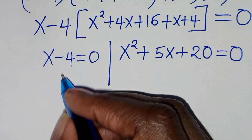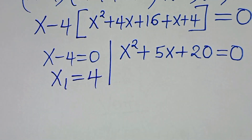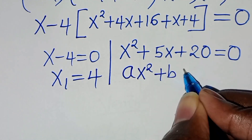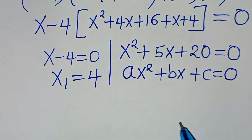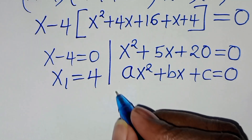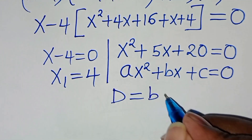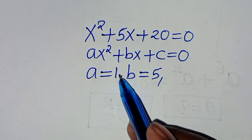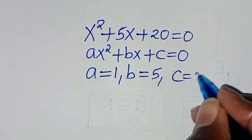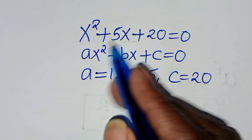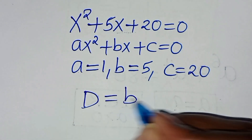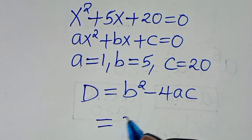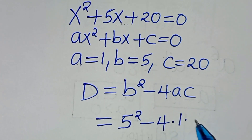From the first part, x₁ equals 4. From the second part, this is a quadratic equation of the form ax squared plus bx plus c equals 0. We need to assess the nature of this quadratic by determining the discriminant, which is b squared minus 4ac. Substituting a equals 1, b equals 5, c equals 20, we have 5 squared minus 4 times 1 times 20.